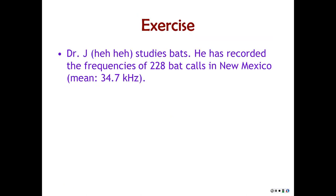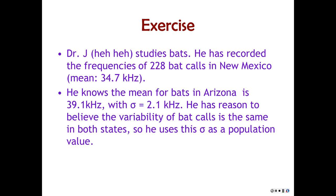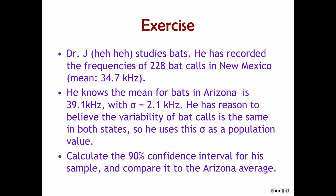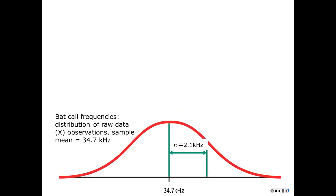Another example: Dr. J studies bats. He's recorded the frequencies of 228 of them in New Mexico and finds the mean frequency. He knows the mean for bats in Arizona is 39.1 kilohertz, with a standard deviation of 2.1. He's going to assume that's also the population standard deviation for his New Mexico bats. Calculate the 90% confidence interval for his sample and compare it to the Arizona average. We assume his sample came from a population with a mean of 34.7 kilohertz and a standard deviation of 2.1 — assumptions that might not hold up perfectly but will help us get a useful confidence interval.